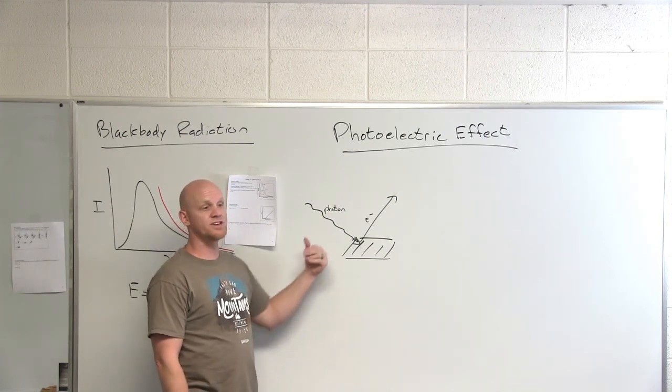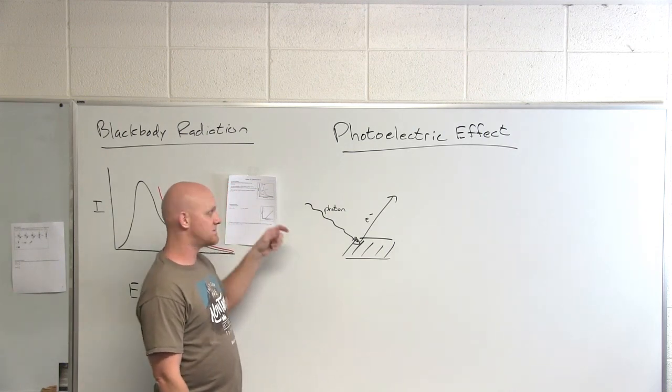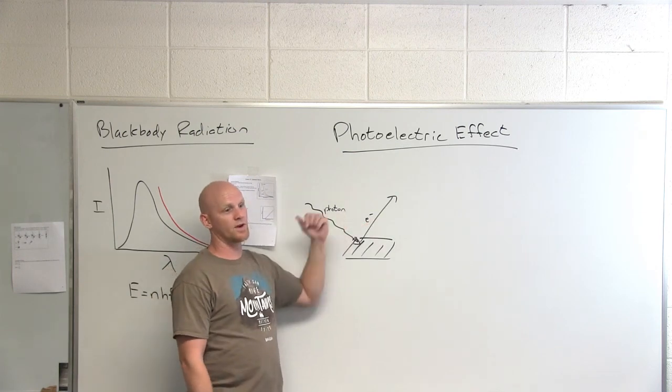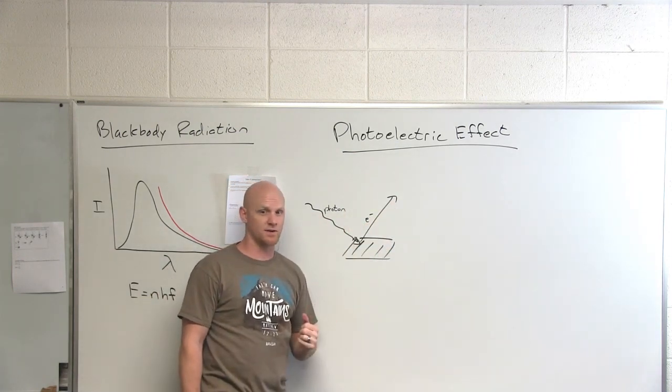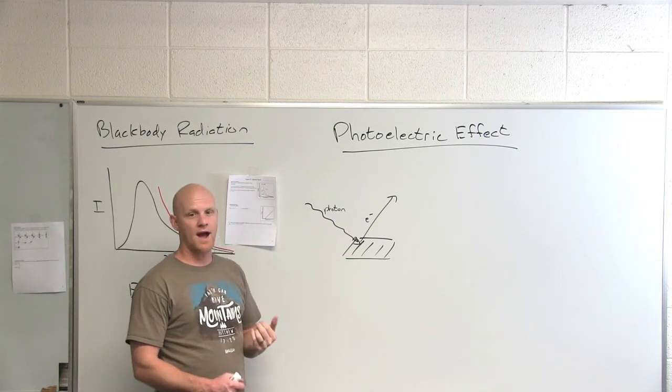And if you used something more energetic than green, say blue light, what you'd find out is the greater the intensity, the more electrons, but the electrons would be coming off on average faster and with overall greater maximum kinetic energy.